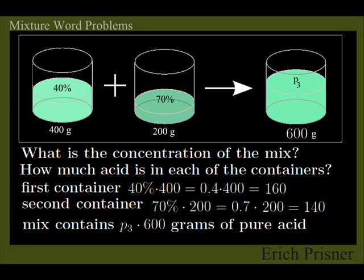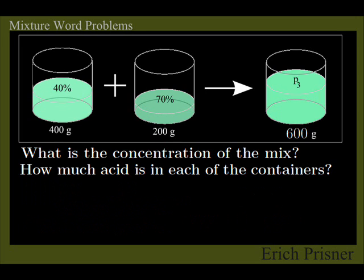The mix contains 600g of concentration, say, P3. That means it contains P3 times 600g of pure acid. But since the pure acid is not spilled when pouring the two liquids together, nothing is lost or gained. This amount of pure acid must equal the sum of the amounts of pure acid in the two ingredients.